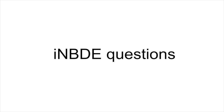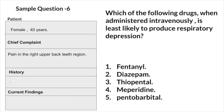Today we are going to learn about high NBD questions. Question 6: Patient, female, 40 years, chief complaint pain in the upper right back tooth region. Which of the following drugs, when administered intravenously, is least likely to produce respiratory depression? Fentanyl, diazepam, thiopental, meperidine, and pentobarbital. Answer: diazepam is least likely to produce respiratory depression.